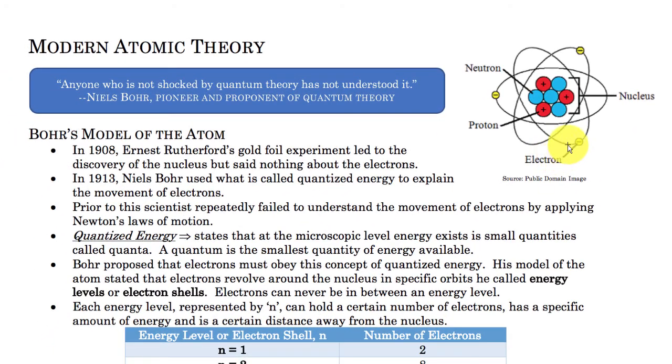So in 1913, Niels Bohr comes up with this idea of how to explain what's going on with the electrons. He takes this revolutionary idea that was formulated by a scientist named Max Planck in 1900. He came up with this idea that energy is quantized.